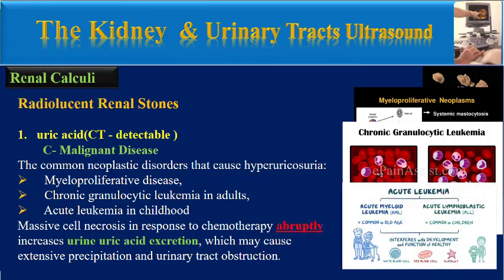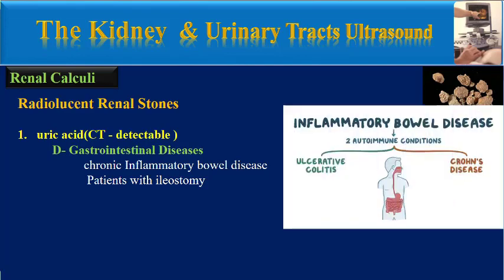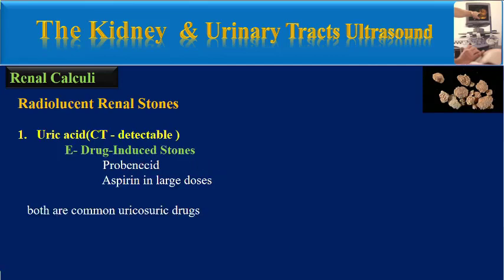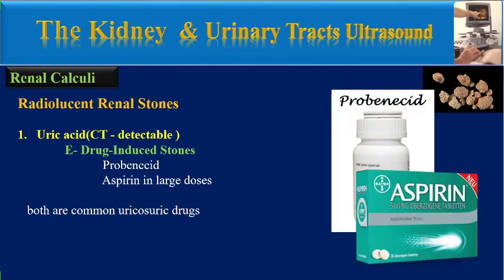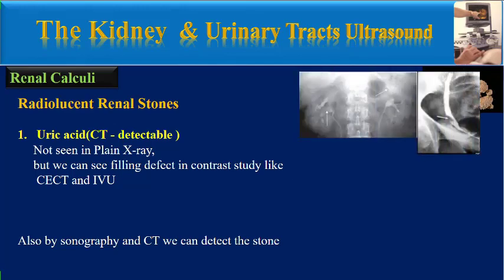The next class is malignant disease. Common neoplastic disorders causing hyperuricosuria include myeloproliferative disease, chronic granulocytic leukemia in adults, and acute leukemia in childhood. Massive cell necrosis in response to chemotherapy abruptly increases uric acid excretion, which may cause extensive crystal precipitation and urinary tract obstruction. The next class is gastrointestinal diseases, including chronic inflammatory bowel disease and patients with ileostomy. Drug-induced stones include probenecid and aspirin in large doses, both common uric acid drugs.